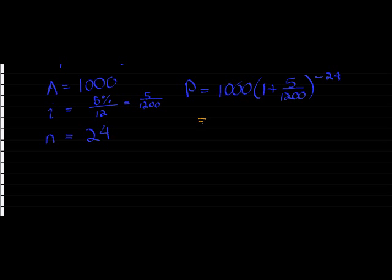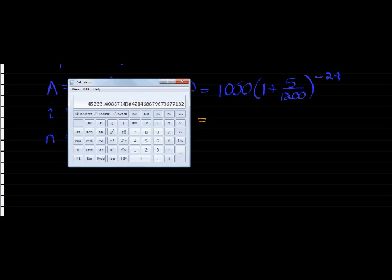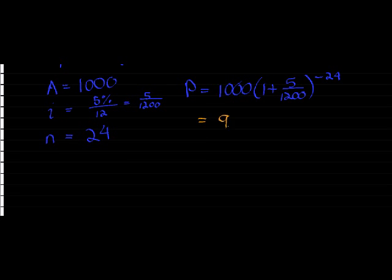And then using my calculator, I simply 1000 multiplied in brackets by (1 plus 5 over 1200) close brackets to the power of negative 24. And we get that it would be worth 905 rand and 3 cents. 905 rand and 3 cents. After rounding to 2 decimal places.